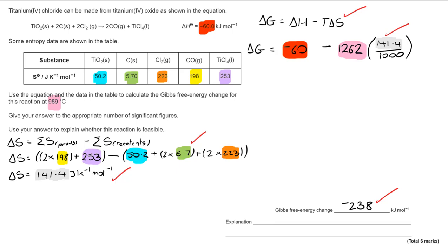Finally, the explanation for whether or not the reaction is feasible. It is feasible because delta G is less than zero.